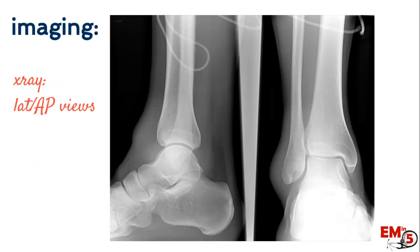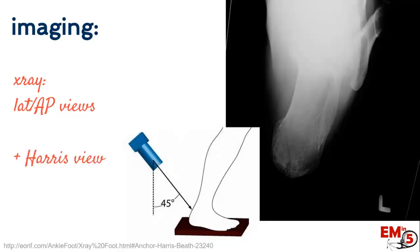As far as imaging, we're just going to get an x-ray — a lateral and AP view. You're probably getting this anyway based on the amount of swelling. You're looking for a calcaneal fracture or any other fractures of the foot, dislocation, or ankle fractures. One other view you might consider is called the Harris view, which gets a really good look at the calcaneus on its own and might give you a better clue as to where the fracture is.